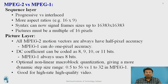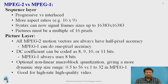In MPEG-2, a DC coefficient can be coded as 8, 9, 10, or 11 bits, whereas MPEG-1 always uses 8-bit coding. MPEG-2 also includes non-linear macroblock quantization, giving a more dynamic step size ranging from 0.5 to 0.56, compared to MPEG-1's range of 1 to 32, and this is beneficial for high-rate, high-quality video.